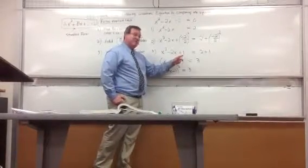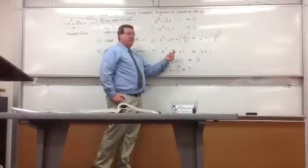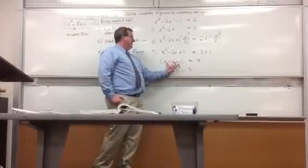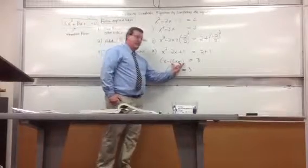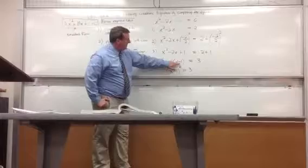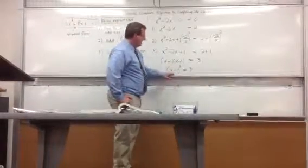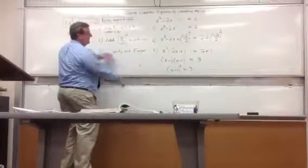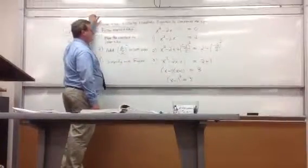What multiplies so you get a positive 1 and adds up to a -2? How about -1 times -1? So it's (x - 1)(x - 1) is the factored form of this quadratic. What is something multiplied by itself? It's something squared. So you have (x - 1)² = 3. You have simplified. You factored it. Now you're down to the last step.